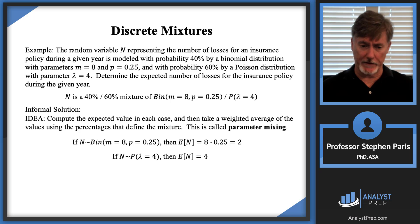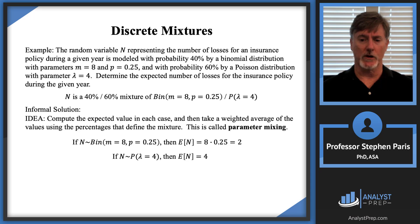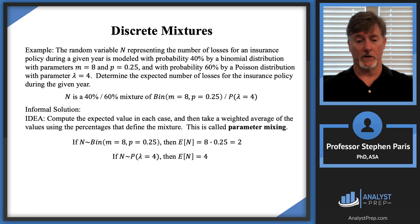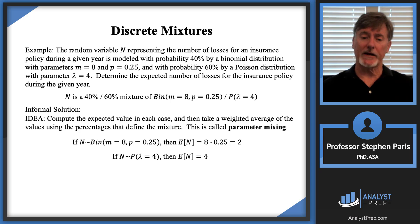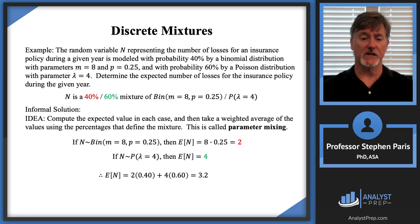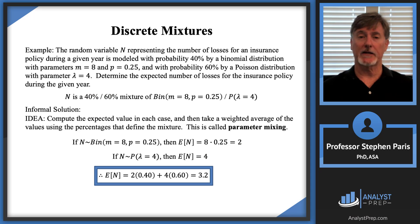On the other hand, if N was Poisson with lambda=4, the expected value of that distribution is 4. So I take a weighted average to get the total expected value of the number of losses: 40% of 2 plus 60% of 4. That gives 3.2, and that's the answer.